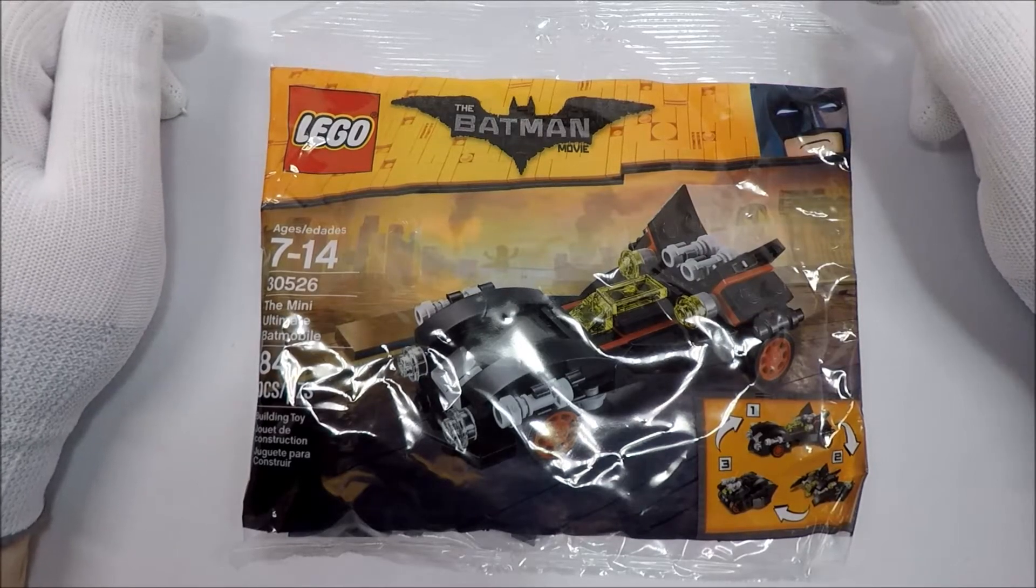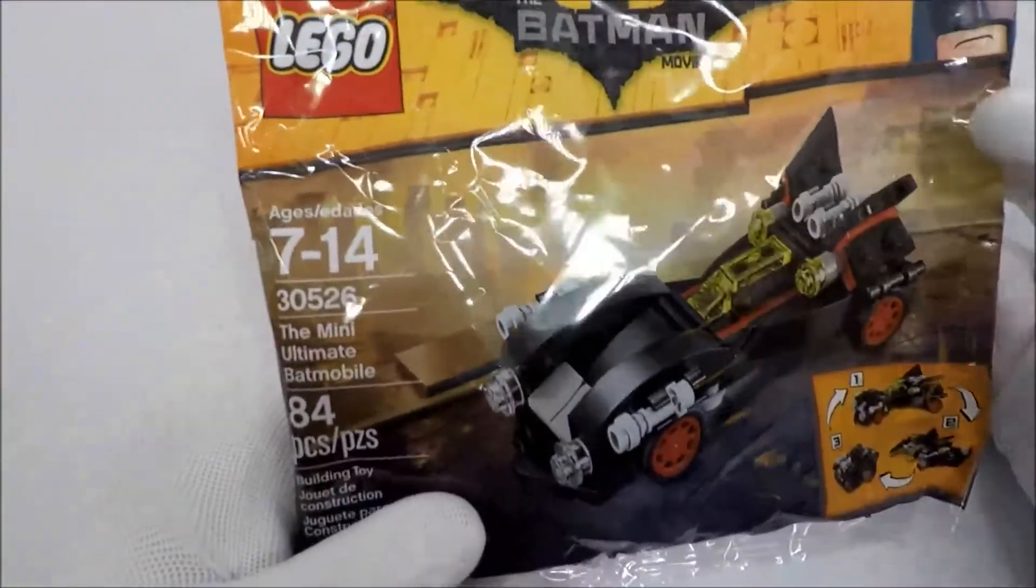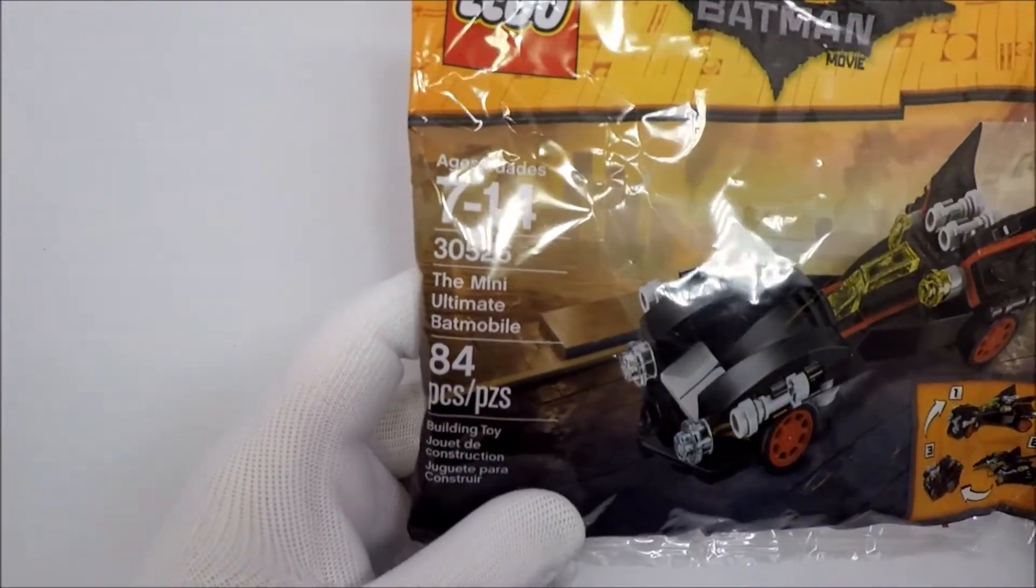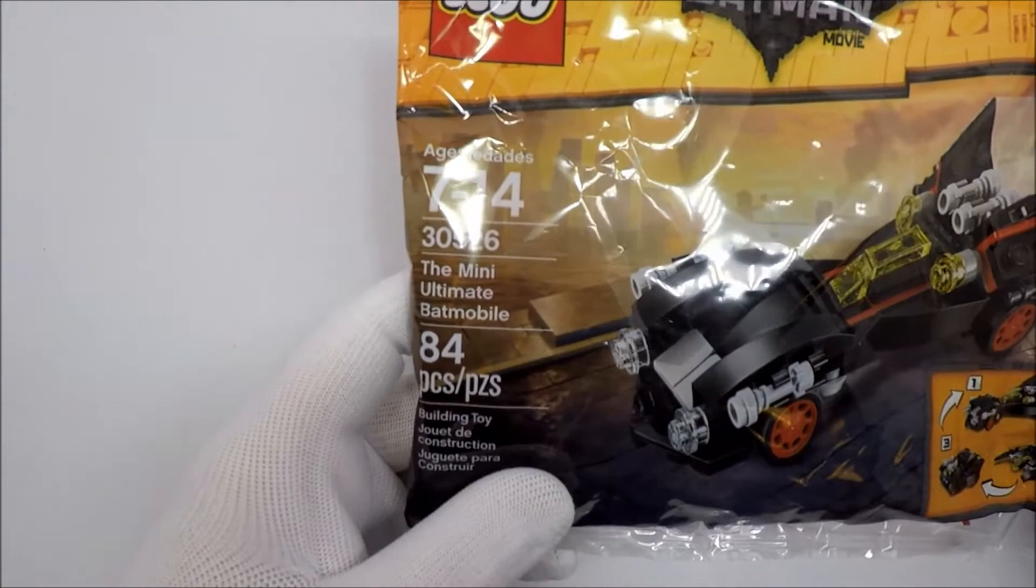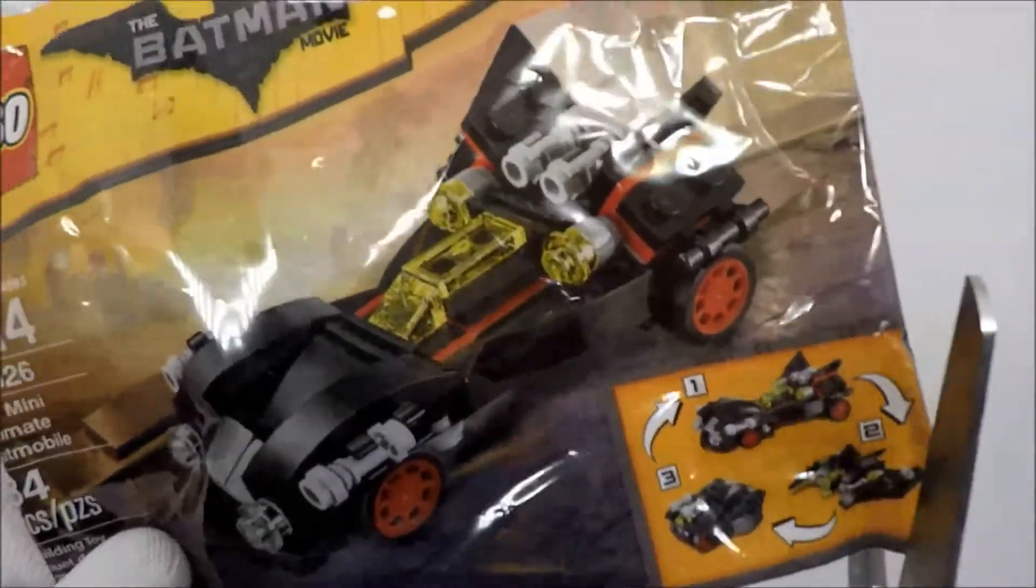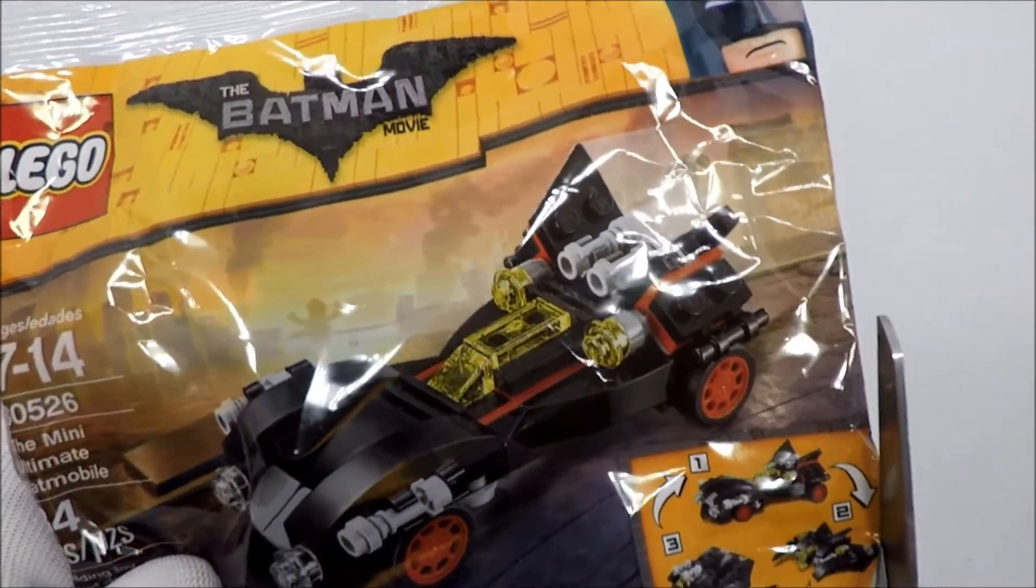Hello and welcome to White Glove Reviews. In this video, we're taking a look at another Lego Polybag. This one is Polybag 30526, the Mini Ultimate Batmobile from the Batman movie. If you enjoy this kind of video, please think about subscribing.